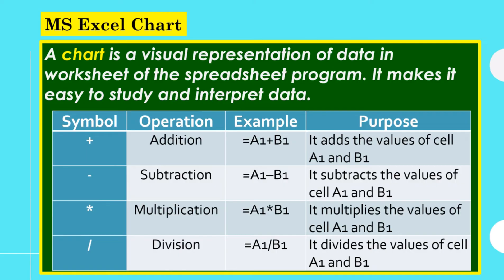For multiplication, we use the symbol for asterisk. Example, equal sign, cell A1, asterisk, cell B1. The purpose is to multiply the values of cell A1 and B1.